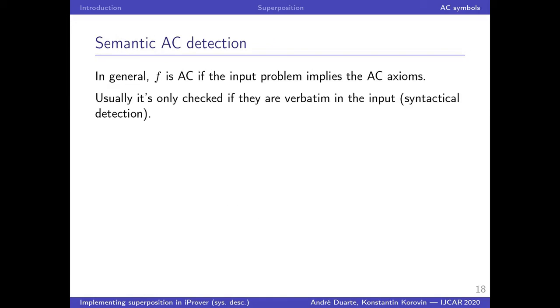Finally, there's the issue of detecting that the symbol is AC. In general, a symbol is AC if the input problem implies the AC axioms. Usually it's only checked if they are verbatim in the input, syntactical detection. The axioms may also be implied by the input problem but not be present right away. This is a very crude approximation of entailment. The symbol may be associative and commutative without the standard axioms actually being present in the input.